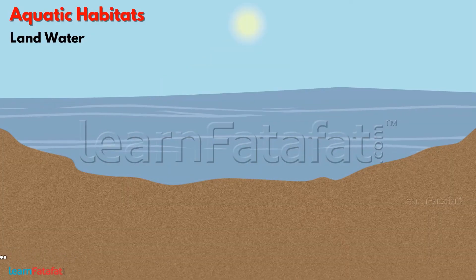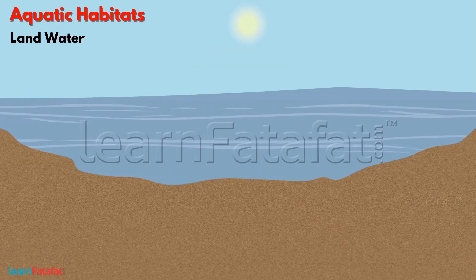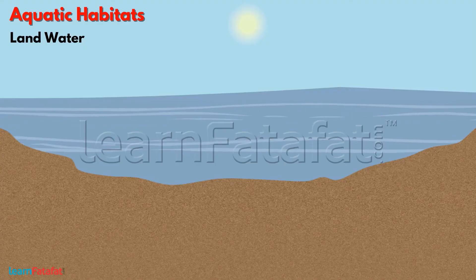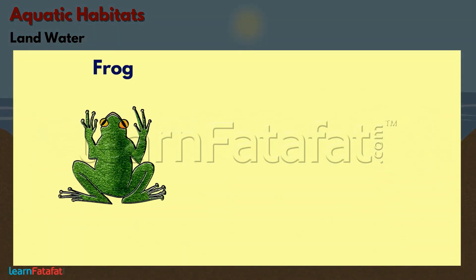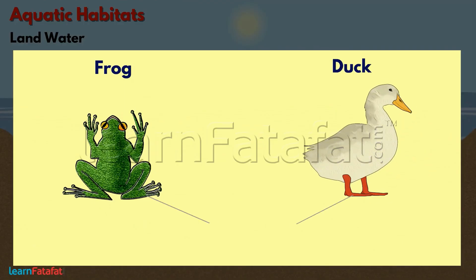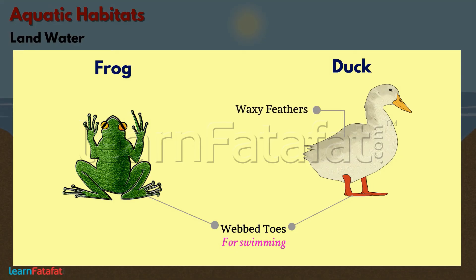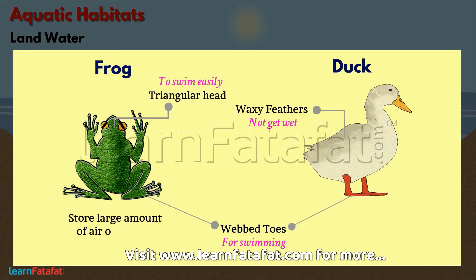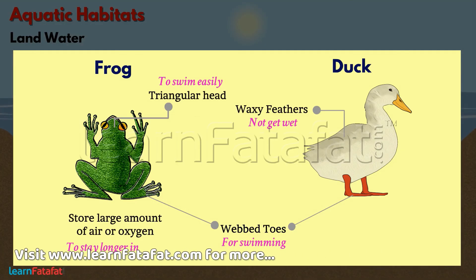We can see a wide variety of animals in these water bodies, and they are adapted to live in such habitats. Animals like frogs and ducks use webbed toes for swimming. The feathers of ducks are waxy, due to which they do not get wet. Frogs have a triangular head to swim easily, and they can store a large amount of oxygen to stay longer in water.